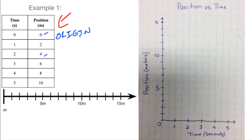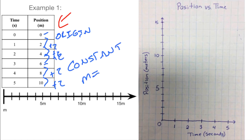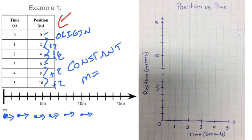At one second, we know we are two meters away from our origin. We are then four meters at two seconds, six meters at three seconds, and at five seconds we are 10 meters away. So it seems like as every second goes by, the position is changing the same amount — each time it's going up two, plus two. So we could call that a constant. It'll be interesting to see what this looks like on the graph. If we were doing this on a motion map, it would be evenly spaced.